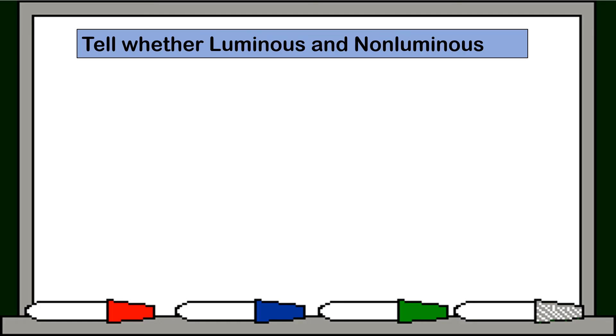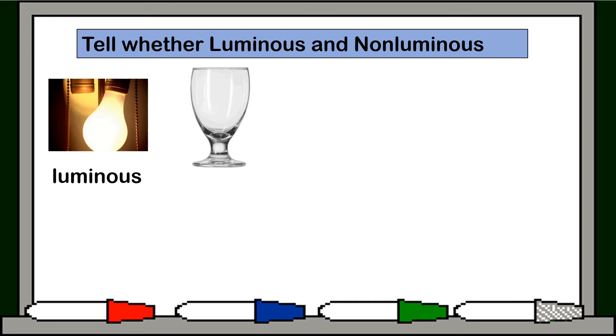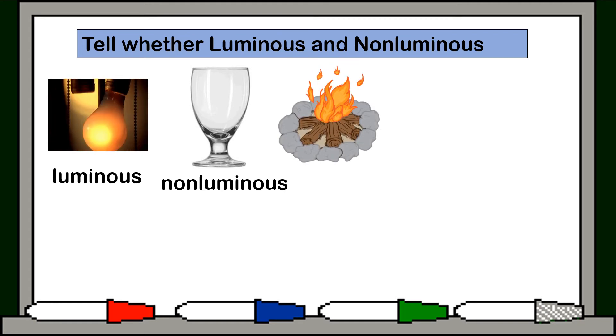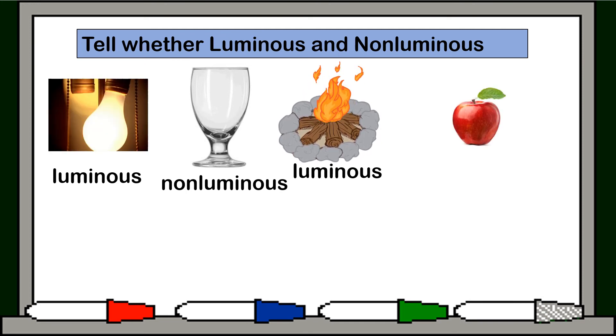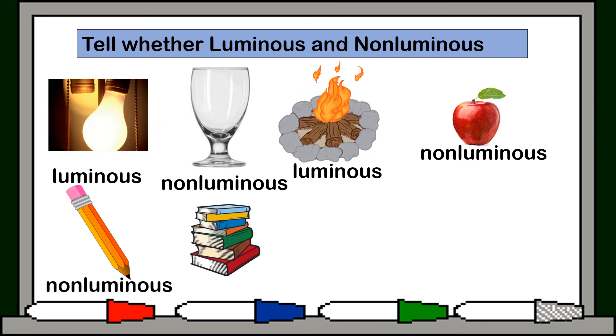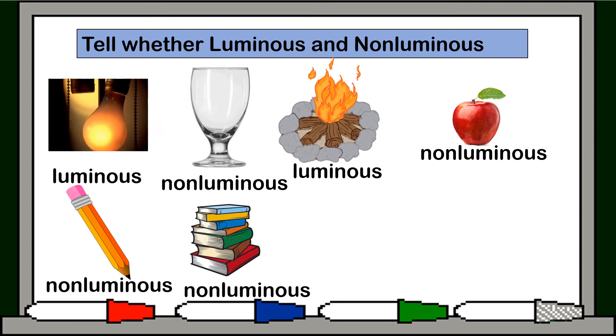Tell whether luminous and non-luminous. A bulb, is it luminous or non-luminous? It is luminous. How about glass? Is it luminous or non-luminous? This is non-luminous because it cannot produce any light. How about fire? It is luminous because it can produce light. How about apple? This is non-luminous. How about pencil? It is non-luminous. How about books? It is non-luminous also.